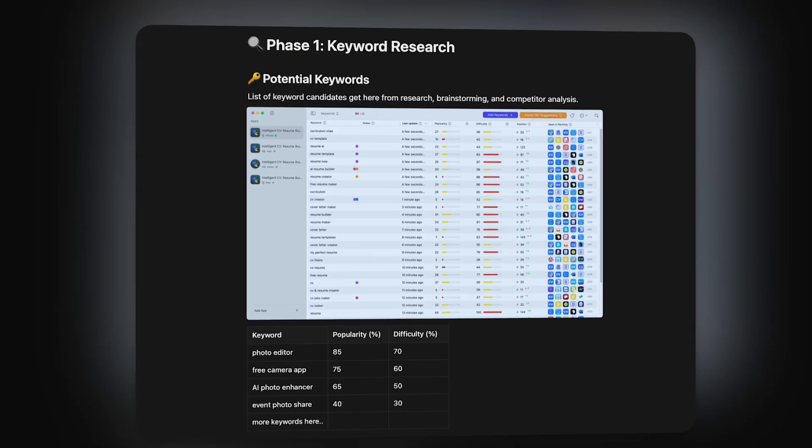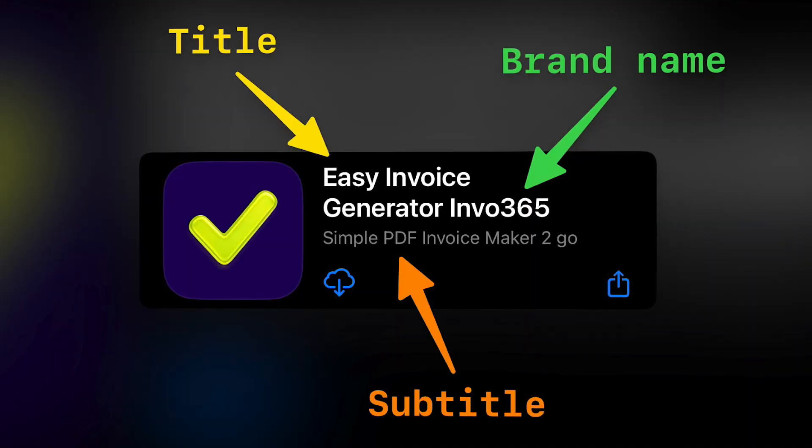Then I do a competitor analysis where I look at the keywords I found and dive deeper into competitors of that keyword to find out what other keywords they are ranking for. This is a great way to find keywords you haven't thought about and helps expand the potential keyword pool — and in many cases this is actually how I find new ideas as well. Having a list of potential keywords, I then start thinking about the application metadata: title, subtitle, and brand name, which I note down in Notion.